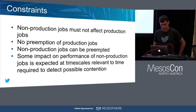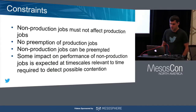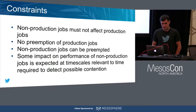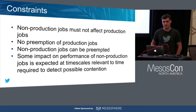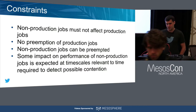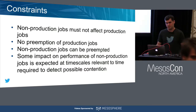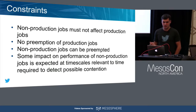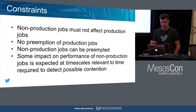We have some limitations and constraints. Non-production jobs must not affect production jobs because production jobs are mission critical. We cannot preempt production jobs. However, we can preempt non-production jobs — what this means is we can kill a job, move it to some other node, and relaunch it there. We also expect some impact on performance of non-production jobs, because we need some time to detect contention and collect metrics. But non-production jobs must not impact production jobs.